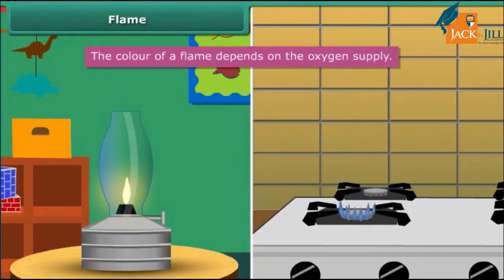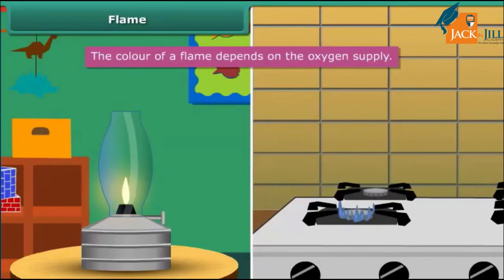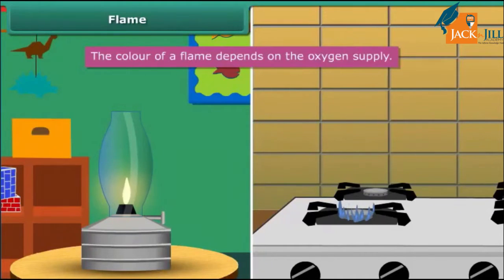When we look at a flame of a kerosene lamp, it is yellow in color, but the flame of a kitchen stove is blue. It is interesting to know that the color of a flame depends on the oxygen supply. If the oxygen supply is less, the flame will appear yellow due to incomplete combustion of fuel, and if it is more, the flame will appear blue due to complete combustion of fuel.